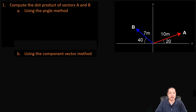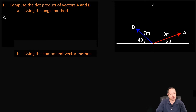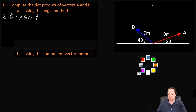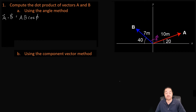Let's go over the answers now. We're going to compute the dot product of vectors A and B using the angle method. This is talking about how the dot product of A dotted with B is equal to AB cosine of the angle between them — the magnitude of A times the magnitude of B times the cosine of the angle between them. We're calling this angle phi.